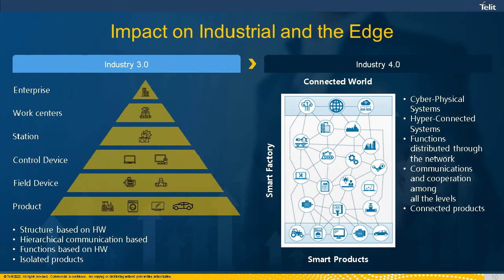Looking at the impact on industrial edge processing — in Industry 3.0, we typically lived in a very hierarchical model. We did the connections, got the data to flow, dealing at a device or control level up to an MES or enterprise level at the top. A lot of people refer to the Purdue model from the late 1990s, where they identified five layers and focused on how things bridge the gap end to end. As we step into Industry 4.0, the entire game changes — you're moving into a hyper-connected domain where devices at every level have the ability to communicate to a device at any other level.